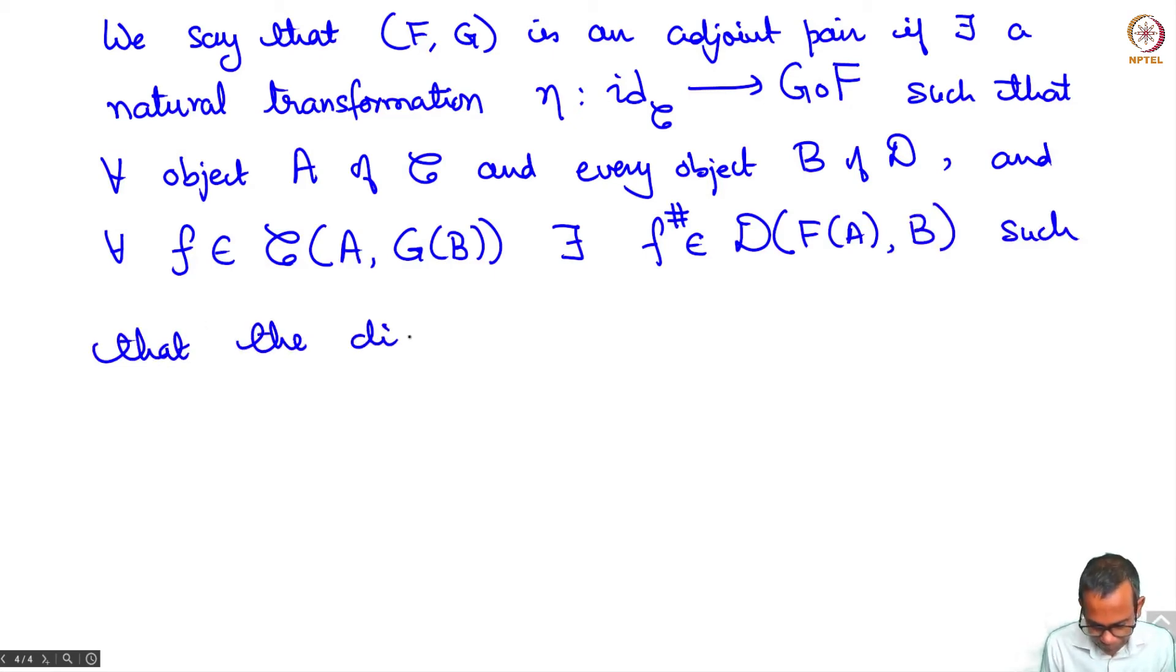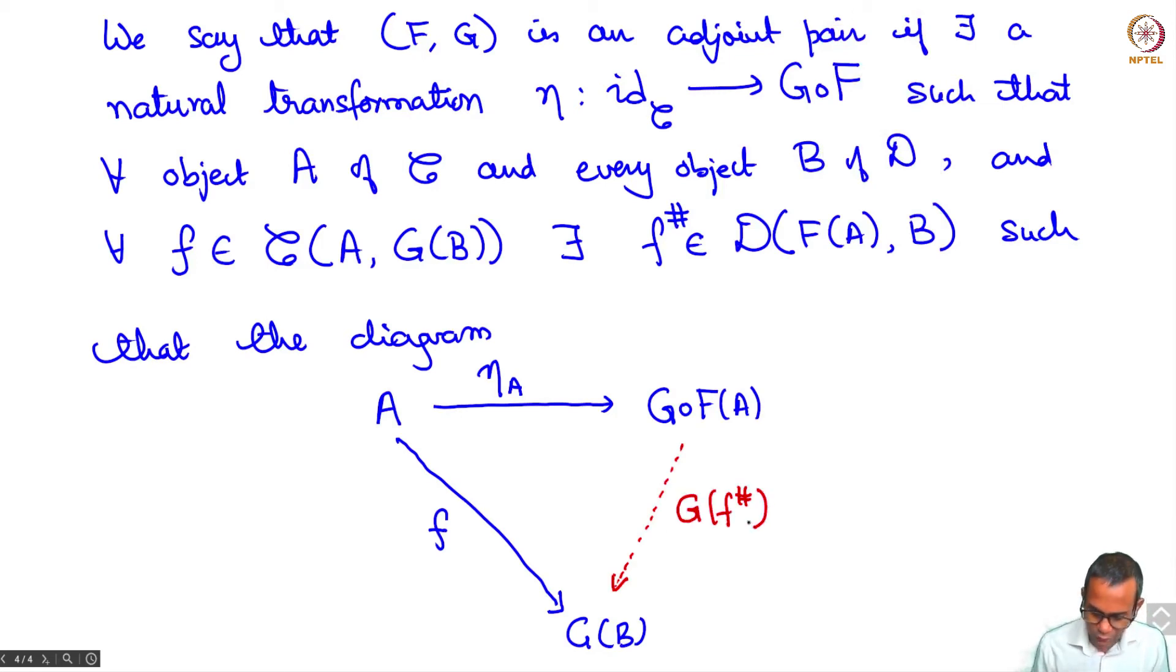So we have A and then we have G circle F of A. And from this object to this we have arrow eta A coming from A to G of B. We are saying that there exists unique f sharp such that if you put G of f sharp then this diagram commutes.